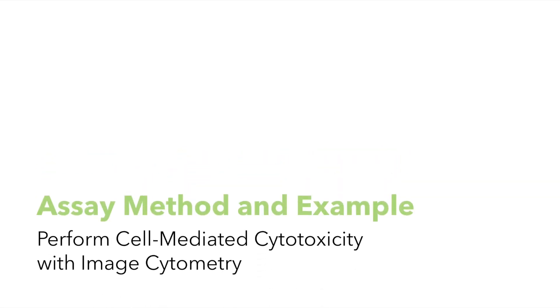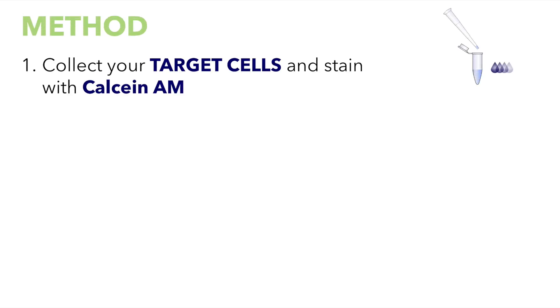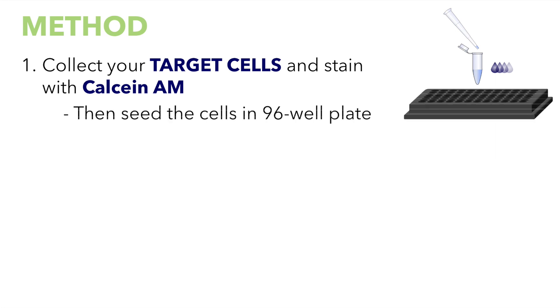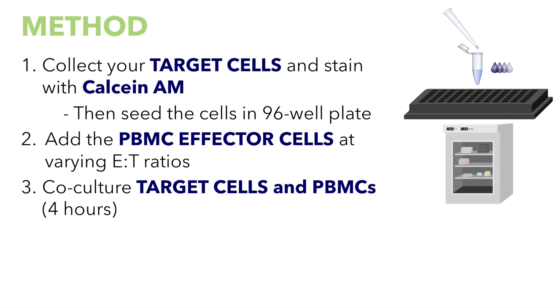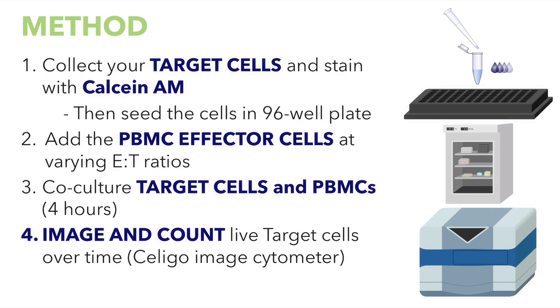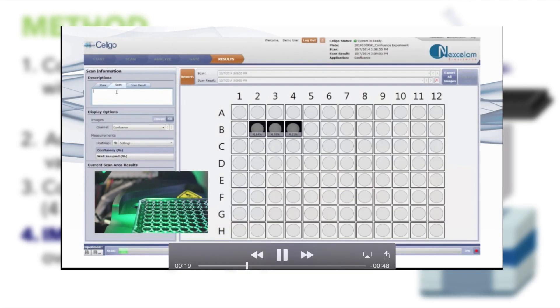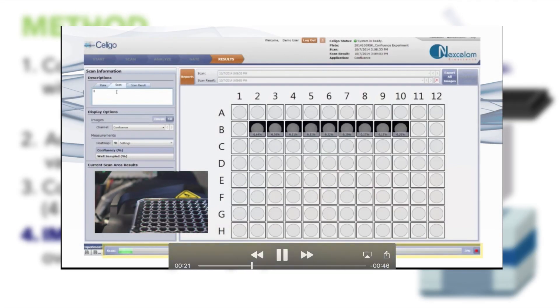To perform a PBMC-mediated cytotoxicity assay using K562 target cells: first, collect your target cells and stain with calcein-AM, then seed the cells in the 96-well plate. Second, add the PBMC effector cells at different E to T ratios with IL-2. Third, co-culture the K562 and PBMCs for 4 hours. And finally, image and count live target cells over time using the Soligo image cytometer.